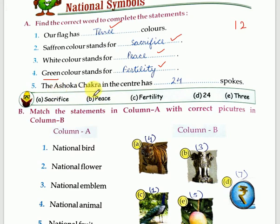The Ashoka Chakra has been taken from the national emblem, which you have already studied in chapter number 12 of SST. Now let's come to the second question — you have to match the following in column A with the correct pictures in column B.